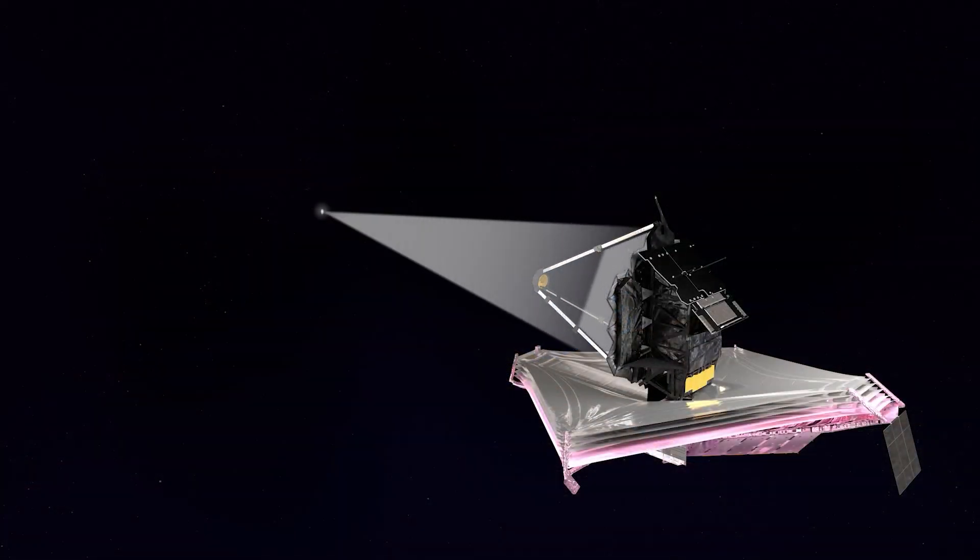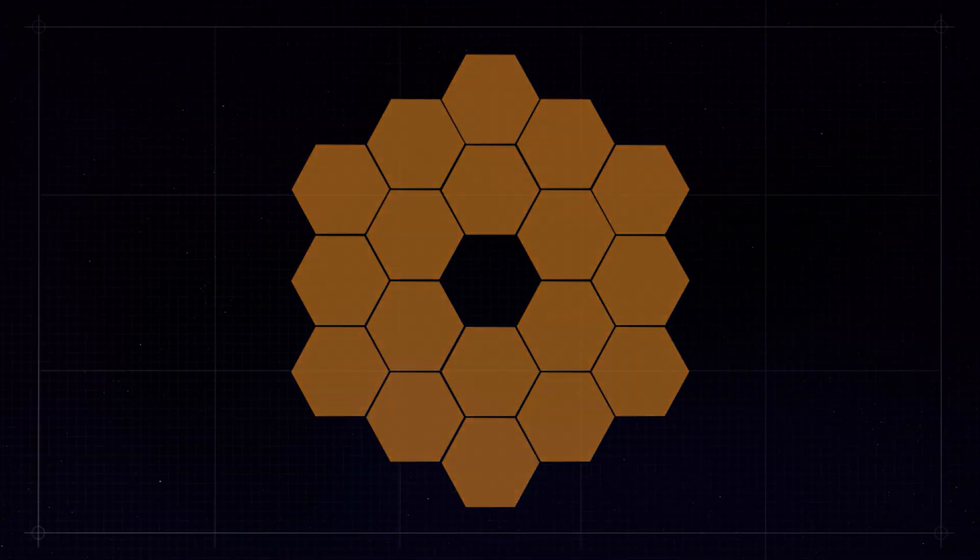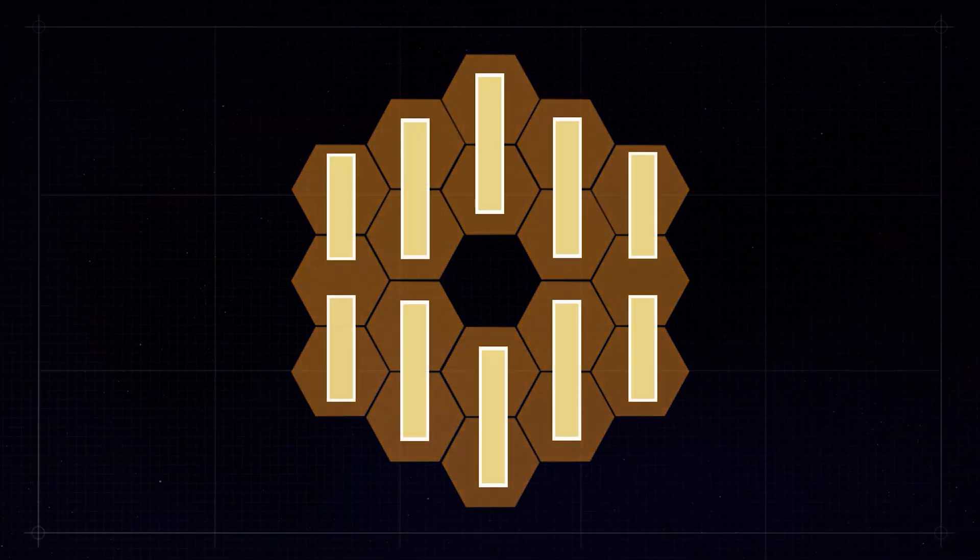The fine-guidance sensor is required for the Webb to precisely point at an item. Despite fast, weak imaging capabilities, it and its closest function as a single device as the primary eyes.